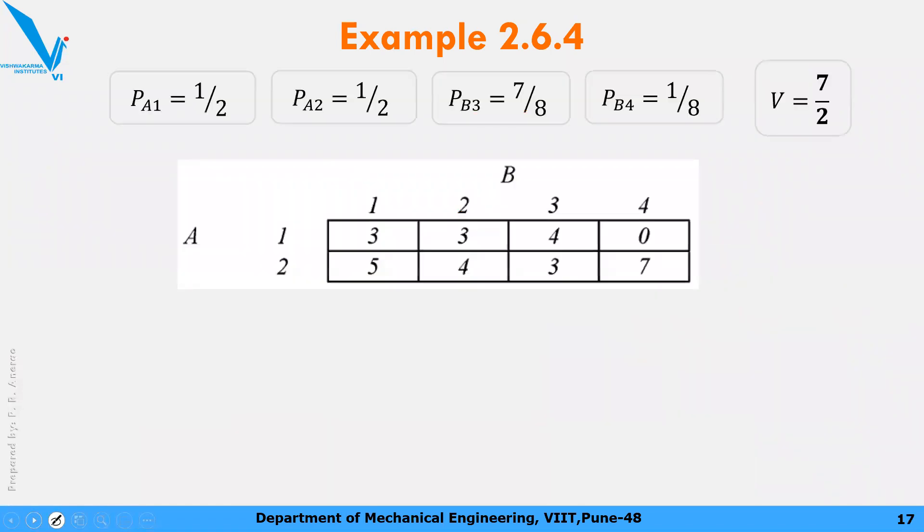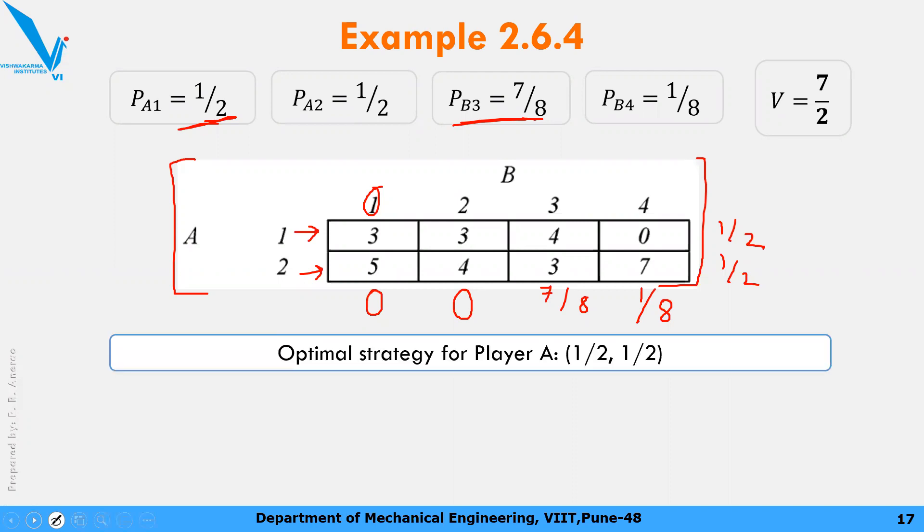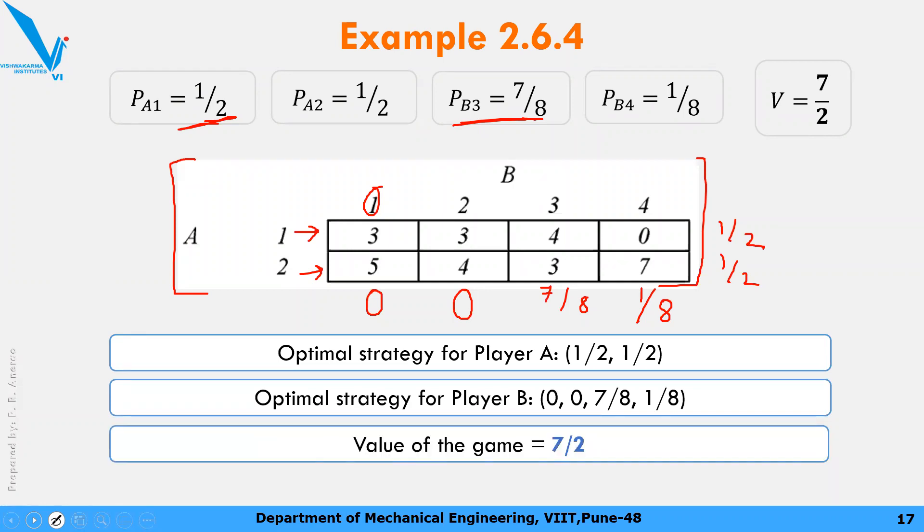So final answer: In this game, B3 strategy we are going to use 7 out of 8 times, and B4 strategy we are going to use 1 out of 8 times. So this is your answer. Or you can clearly mention in this way: Optimal strategy for player A is 1 by 2 and 1 by 2. For player B is 0, 0, 7 by 8, 1 by 8. And the value of game is 7 by 2. So that will be the end of graphical method.